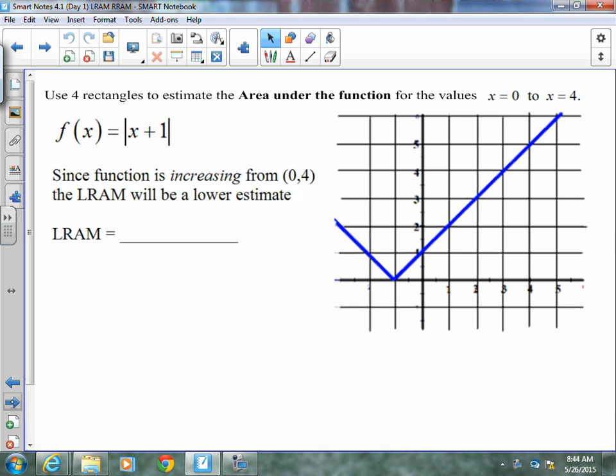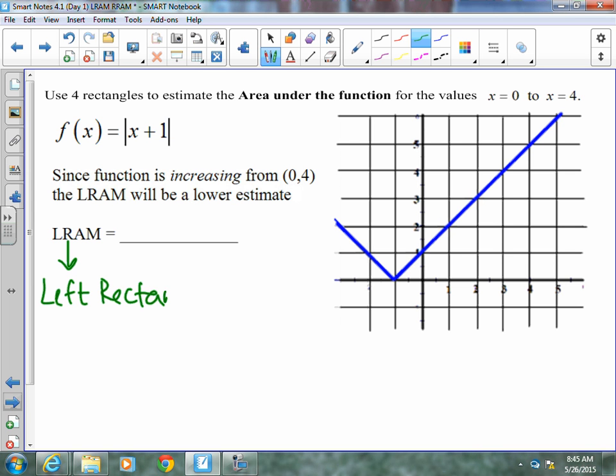These first examples say use four rectangles to estimate the area under the function for the values x equals 0 to x equals 4, under the function f of x equals the absolute value of x plus 1. Since the function is increasing from 0 to 4, the LRAM will be a lower estimate. Let's talk about what an LRAM is. LRAM stands for left rectangle approximation model.